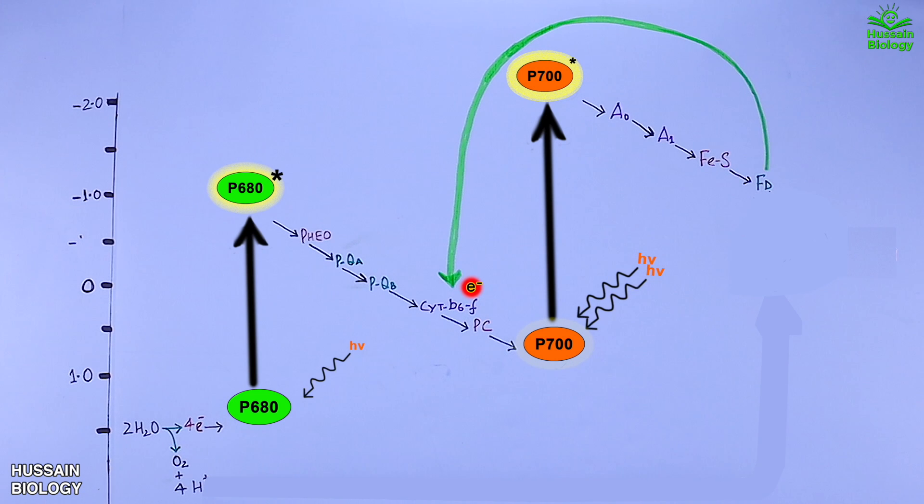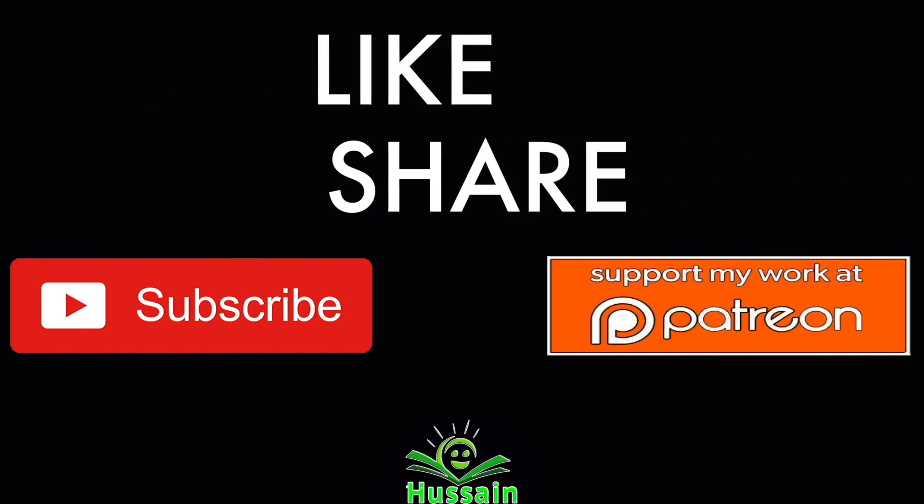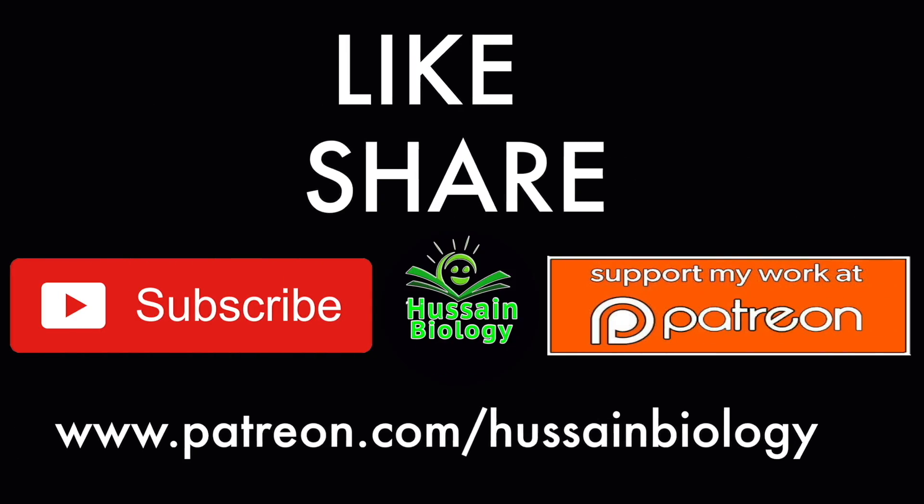And in this way we get the cyclic electron flow, and by this mechanism the protons are getting generated which are then used to generate ATP molecules by ATP synthase. So this is how cyclic and non-cyclic electron flow is driven through Z-scheme according to their respective reduction potentials. I hope you liked the video. If you liked it, give it a thumbs up. Do consider supporting my work on Patreon or YouTube and make sure to subscribe to this channel. Thanks.